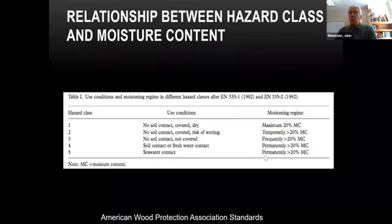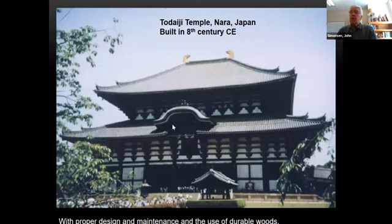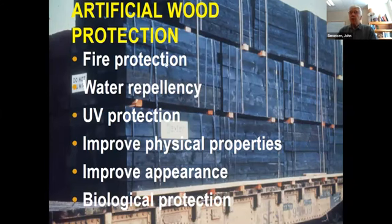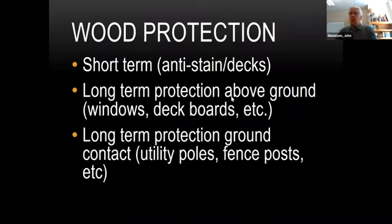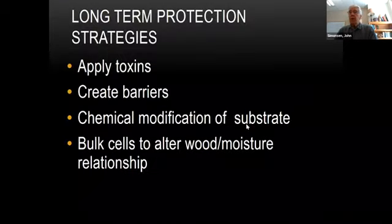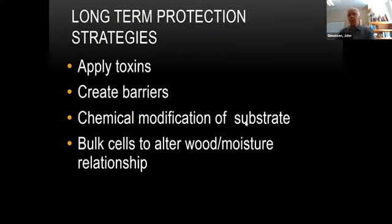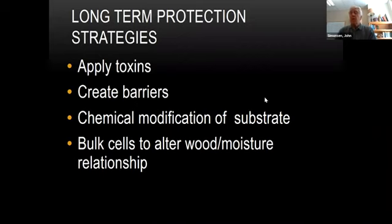We looked at wood treatments and different hazard classes. There are various reasons people treat wood, but the biggest is to prevent decay. There's short-term and long-term treatment, and ground contact versus above ground. Dipping is short term; you don't use pressure treatment for short term. Applying toxins is by far the most common type. Others, like creating barriers, are niche in the marketplace.